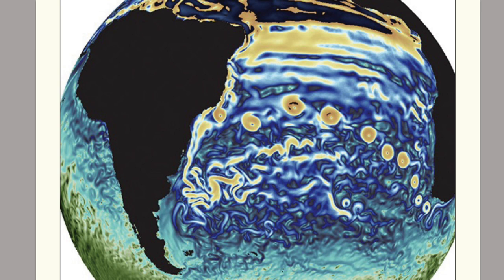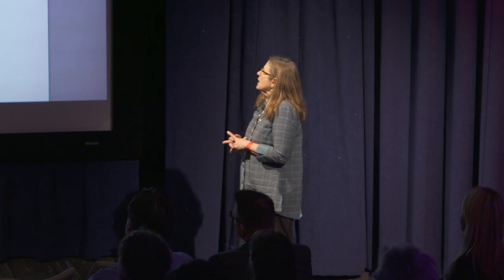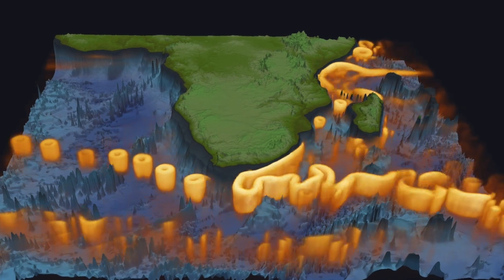What we did was build color tools that would enable us to color and highlight what the scientists needed to see within their data. These are the eddies that are crossing the ocean. That was step one.